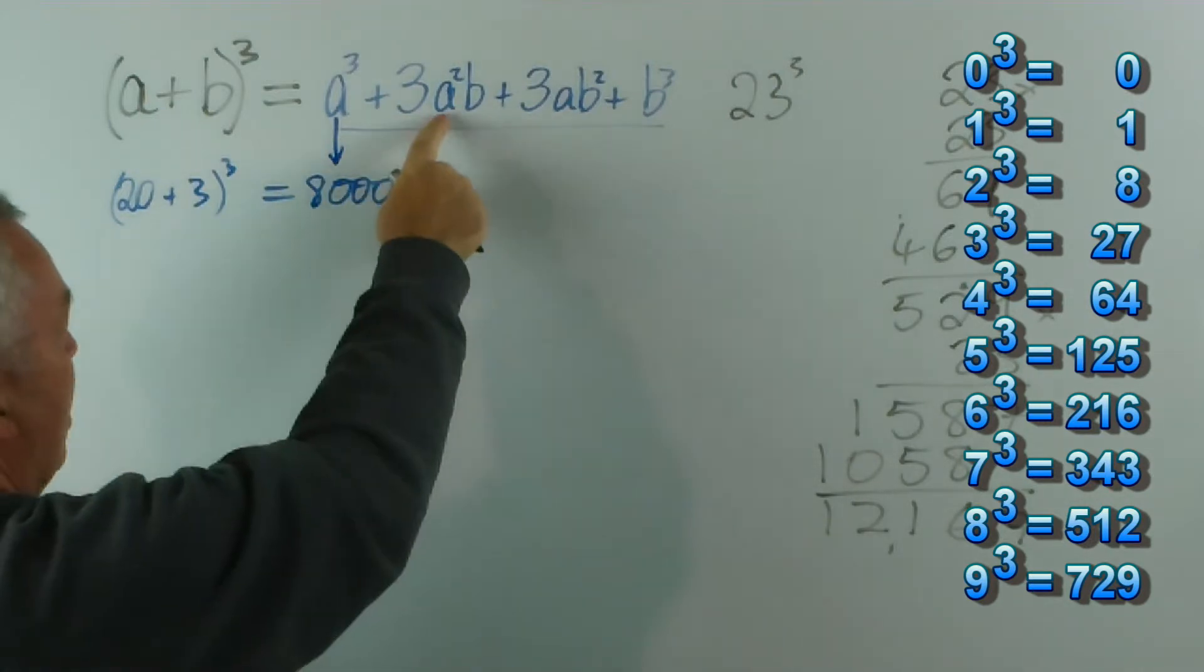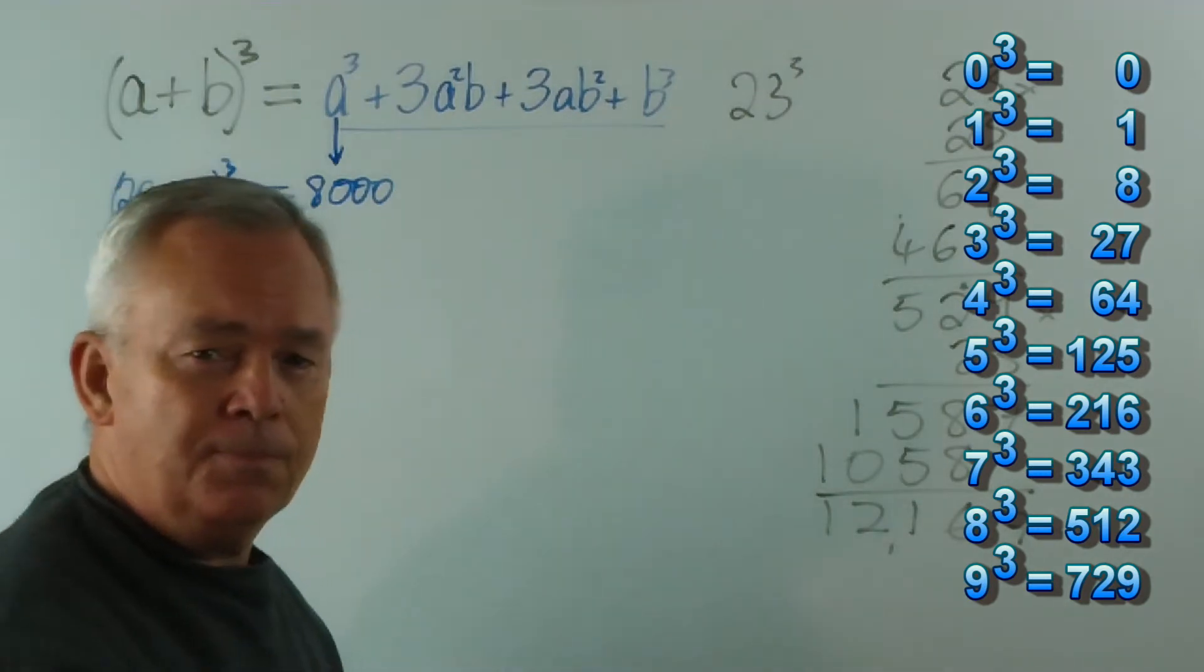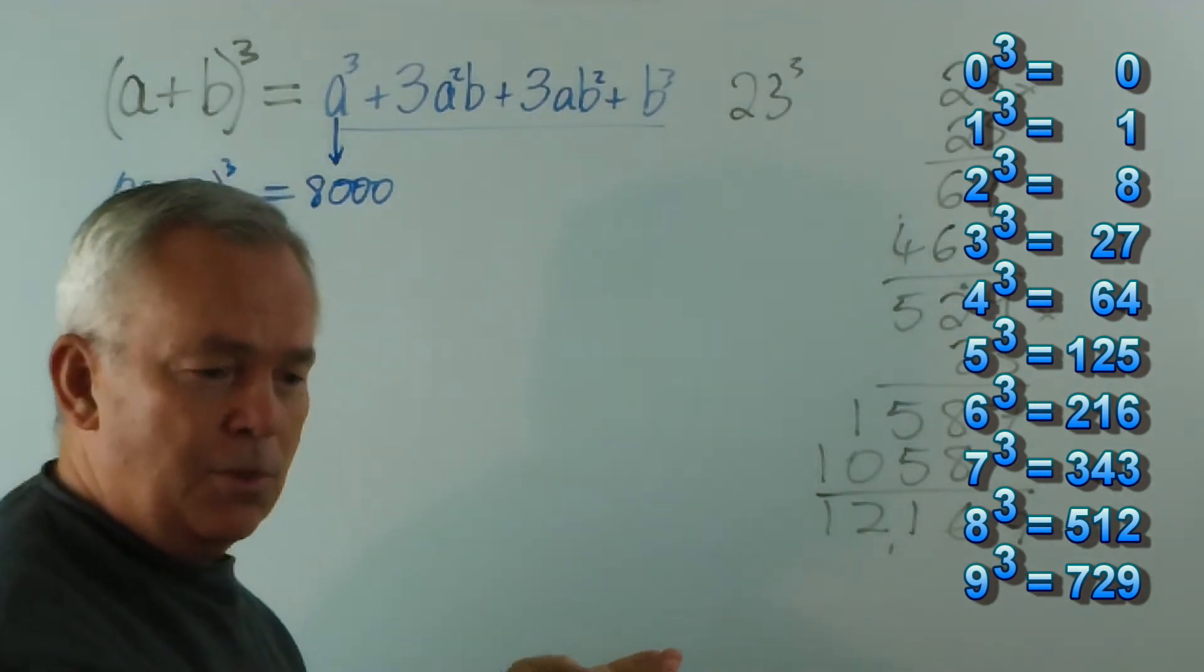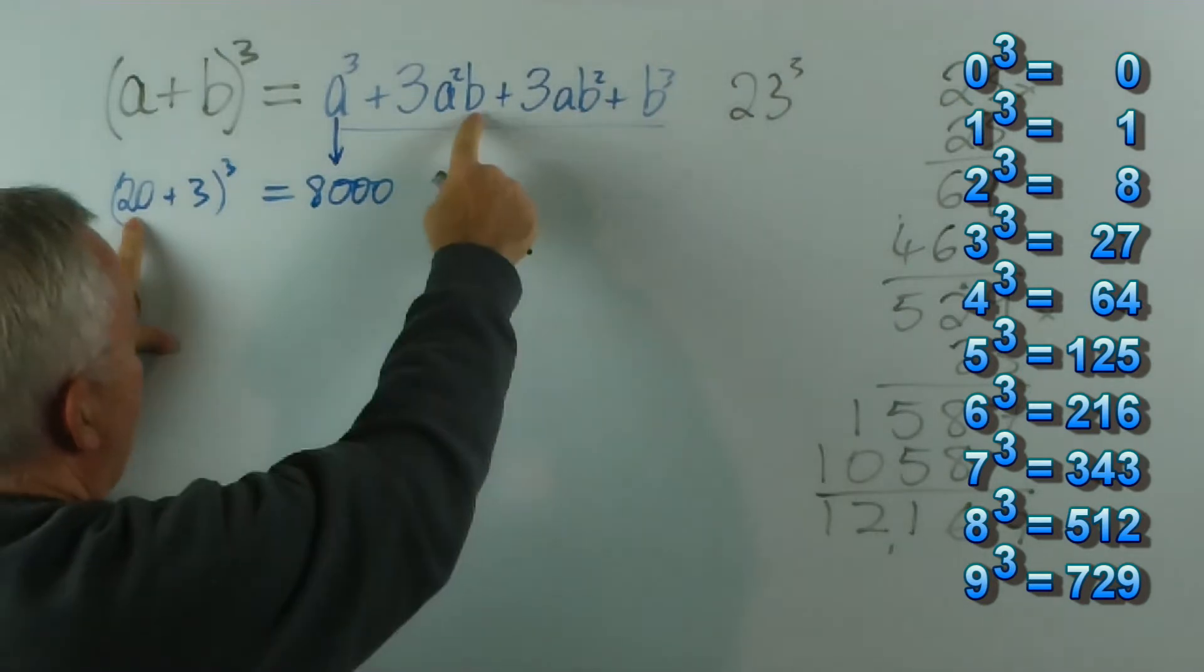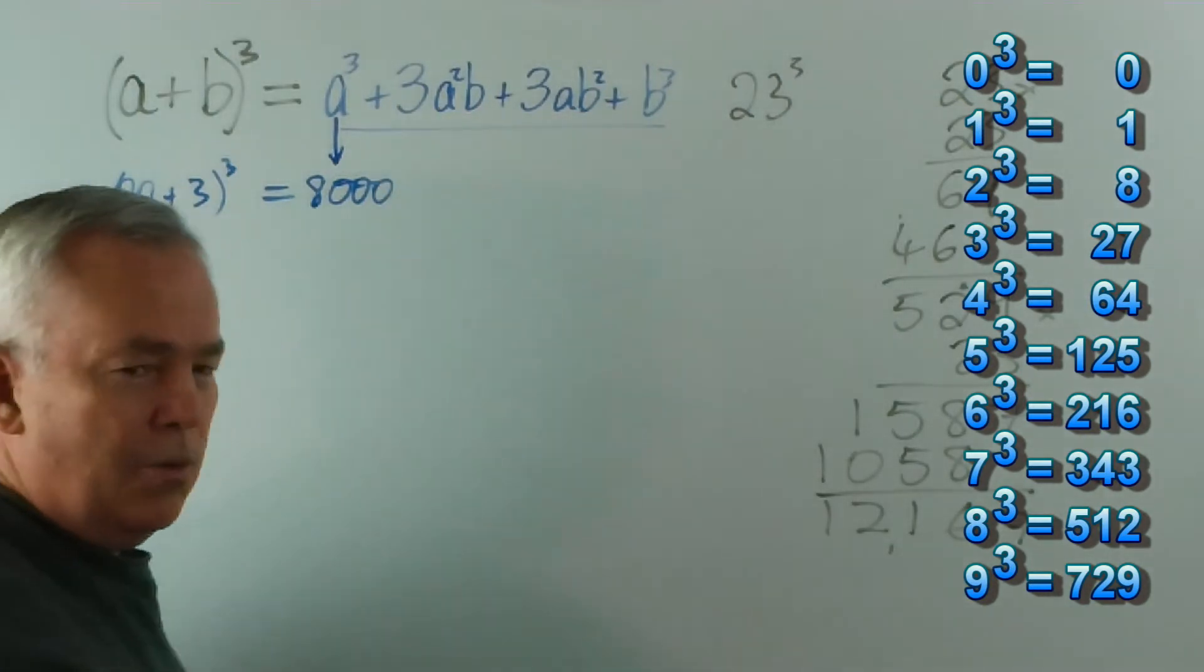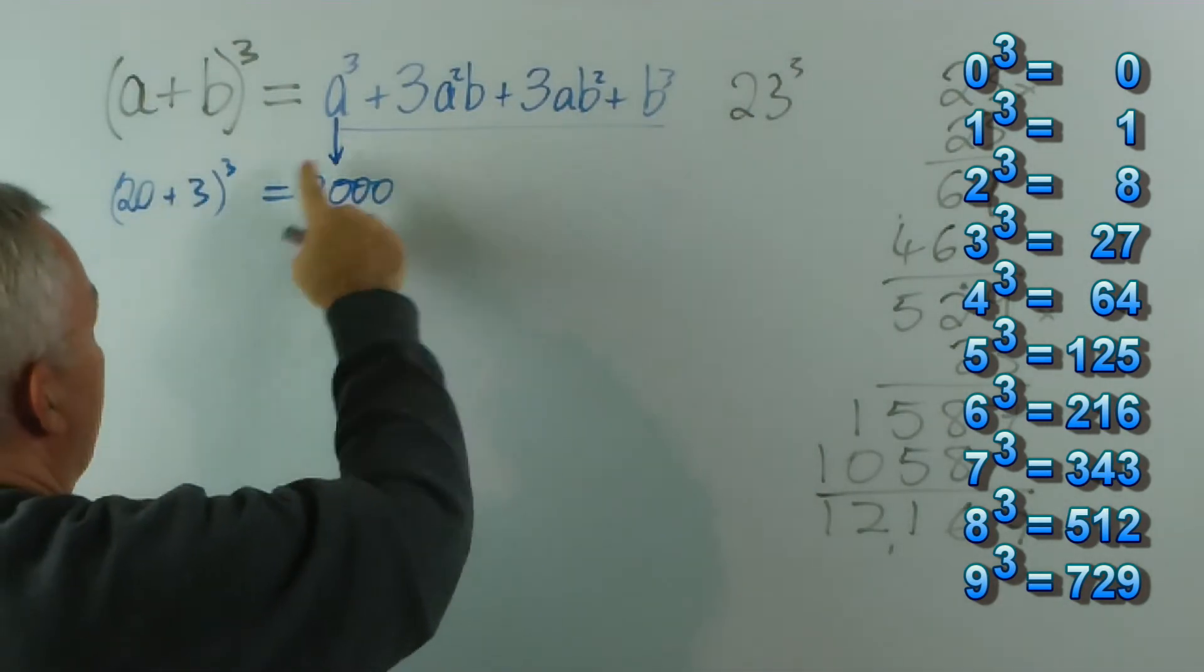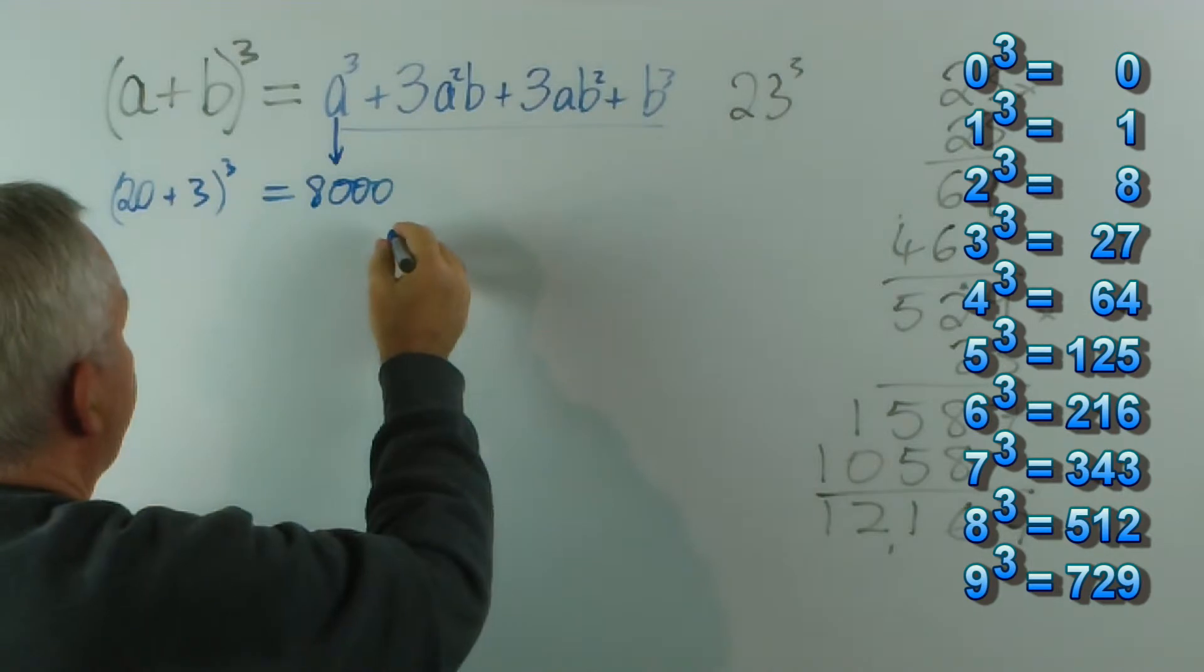How do we do this? A squared b. 20 squared is 400. 2 squared is 4. 20 squared is 400. times 3 is 1,200. Now, we could multiply that by three in our head as well. We will do that this time. So, we've got 1,200 times 3 is 3,600.